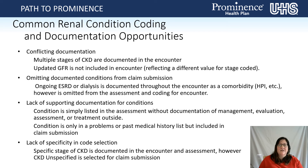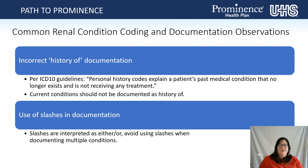Lack of specificity in code selection is also a common issue: CKD specificity is not documented in the encounter, or CKD staging is documented throughout the encounter but CKD unspecified gets selected for claim submission. Ensure whatever is documented in the progress note is reflected in the assessment for claim submission. Recall the term 'history of': per ICD-10 guidelines, personal history codes explain a past medical condition that no longer exists and is no longer receiving treatment. If the diagnosis is current — even without presenting signs and symptoms, if it's a chronic condition — avoid using the term 'history of.'